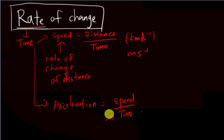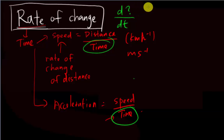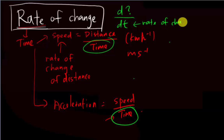For rate of change, something very important to mention is that time is always at the bottom. When you write the rate of change of anything, it is always 'dt' at the bottom. 'dt' means change of time. So rate of change of distance, for example, is written as d(distance) over dt.